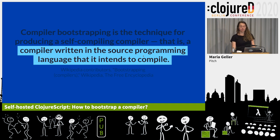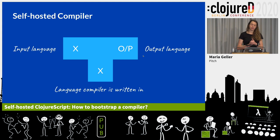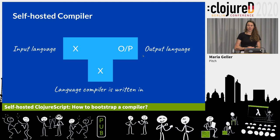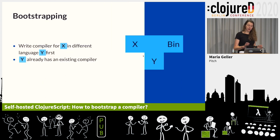If we look at our definition again, focusing on the highlighted part — a compiler written in the source programming language that it intends to compile — and try to translate this to our T-diagram, it would look something like this. So X is the language that the compiler is written in, but X is also the language that it accepts. But how does it work? If we start out writing a compiler for X but we don't really have an executable yet, how do we get there?